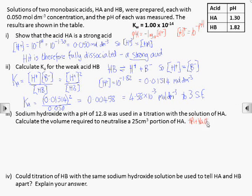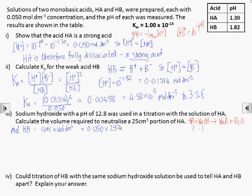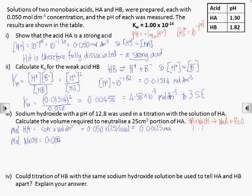We can write a balanced equation for the neutralization of HA using sodium hydroxide. We see that it's a 1 to 1 mole ratio. Given the concentration of HA, we can work out how many moles of HA in 25 cm³ of the acid, remembering to convert cm³ to dm³ because the concentration is in moles per dm³. The 1 to 1 mole ratio tells us that we need 0.00125 moles of sodium hydroxide to neutralize this.